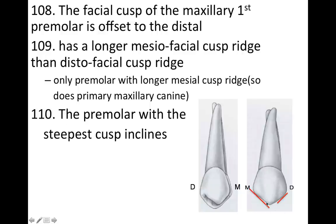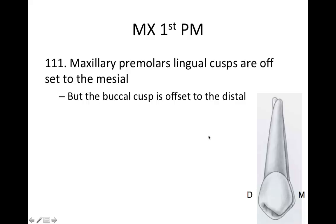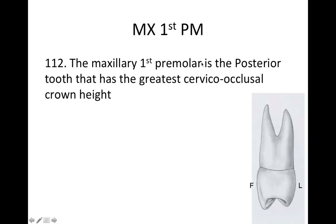The maxillary first premolar has the steepest cusp inclines of any premolar — not only that, but the mesial cusp is also longer than the distal. These are unique features they like to ask about. Also note that for the maxillary premolars — both first and second — the lingual cusp is offset to the mesial, while the buccal cusp is offset to the distal.